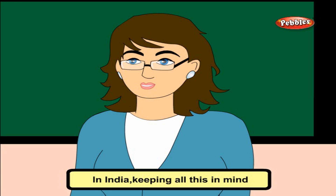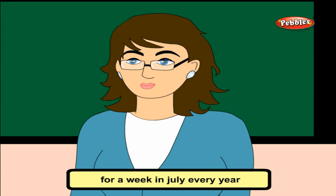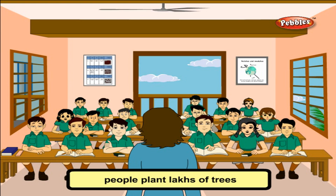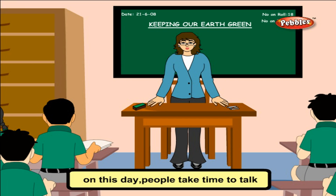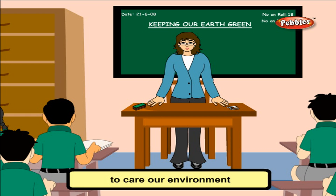In India, keeping all this in mind, Vana Mahotsav is celebrated for a week in July every year. All over the country, people plant lakhs of trees during the seven days. World over, we celebrate the World Environment Day. On this day, people take time to talk and think about ways to care for our environment.